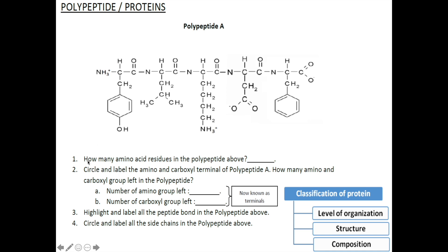Question 1: How many amino acid residues are in the polypeptide above? As I mentioned earlier, the backbone of a polypeptide is made up of repeating NCC, and each NCC corresponds to each amino acid residue. In polypeptide A, there are 5 repeating NCCs — 1, 2, 3, 4, and 5.